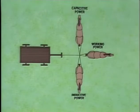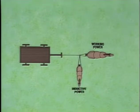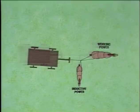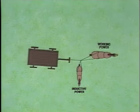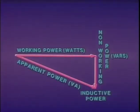Now suppose there is less capacitive power in the system than inductive power. The capacitive power will only cancel an equal part of the inductive power. The remaining inductive power, together with the working power, will move the wagon to the right and down. Work is being performed, but not as efficiently as when the capacitive and inductive power are completely canceled out. The power that a utility has to produce to meet the demands for both working power and non-working power is called apparent power.